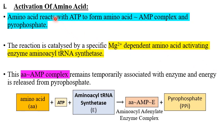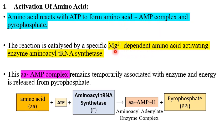The first step is activation of the amino acid. The amino acid will react with ATP to form a complex — the amino acid AMP complex. ATP will be converted into AMP in this complex, with the release of two phosphate groups as pyrophosphate. For this reaction we need a specific magnesium-dependent amino acid activating enzyme: amino acyl tRNA synthetase.